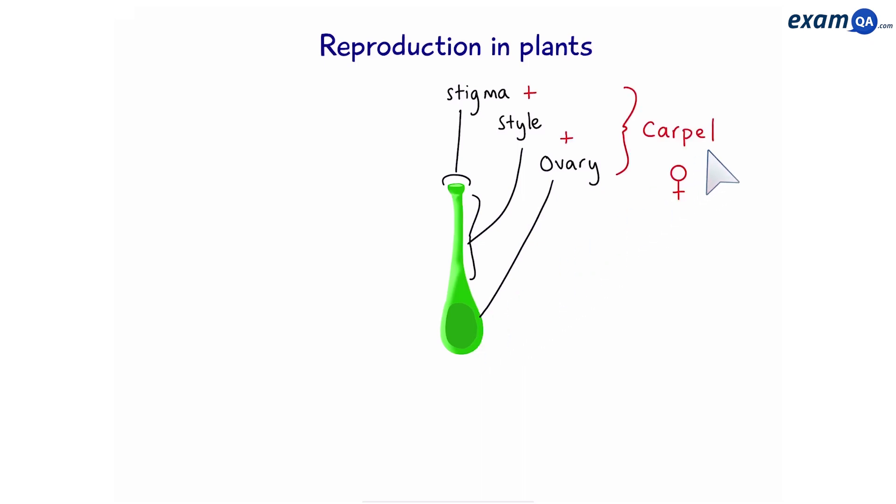These three together make the carpel, also known as the female part of the plant. Inside the ovary, we find the ovule. This contains the female sex cells.